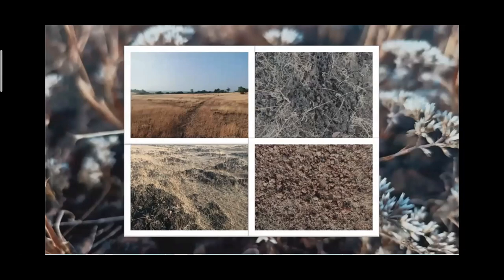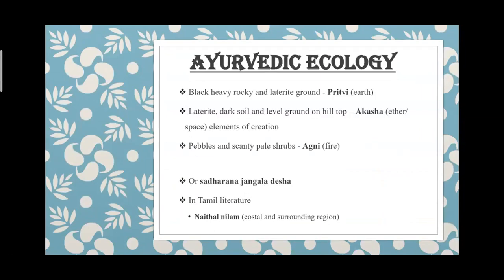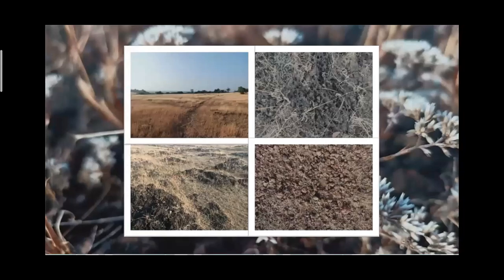Looking into the place from an Ayurvedic viewpoint, in Ayurvedic ecology we can understand that this is a place having the predominance of Prithvi, Akasha, and Agni Maha Bhutas — as shown in pictures, it is a level ground with big heavy black rocks and kinds of pebbles.